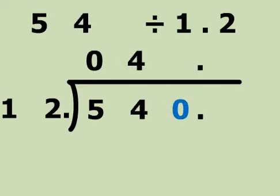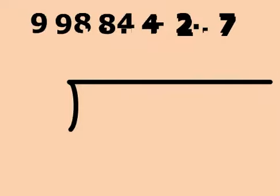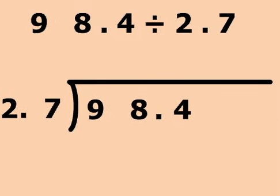If there's a decimal in the divisor, move it to the right to the end of the line. But count how many numbers that you pass by.